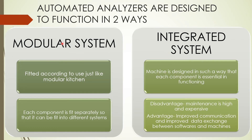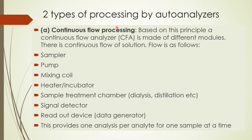Modular systems are the open systems. Based upon processing, there are two types of auto-analyzers. The first is continuous flow processing. Based on this principle, a Continuous Flow Analyzer (CFA) is made up of different modules. The flow is as follows: first the sample, then the pump, the mixing coil, heater and incubator, sample treatment chamber, signal detection, and readout device. This provides one analysis per analyte for one sample at a time — the sample flows through and gives you the result.